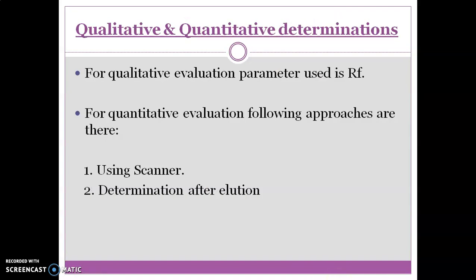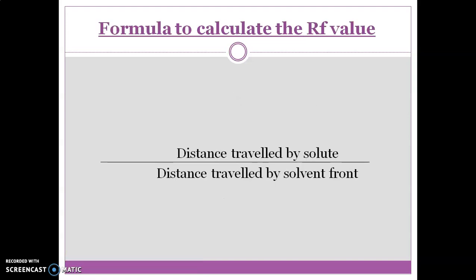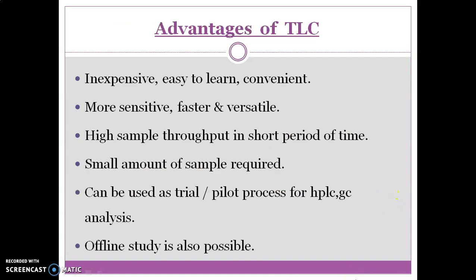We can also go for qualitative and quantitative determination. For qualitative evaluation, the RF value is used, and for quantitative evaluation, we can use either a scanner or determination after elution. RF value — the retention factor — is the distance travelled by the solute divided by the distance travelled by the solvent front. It is always less than 1.